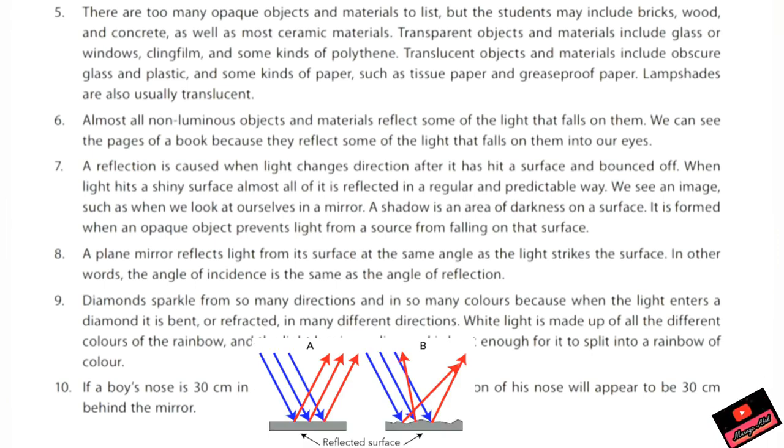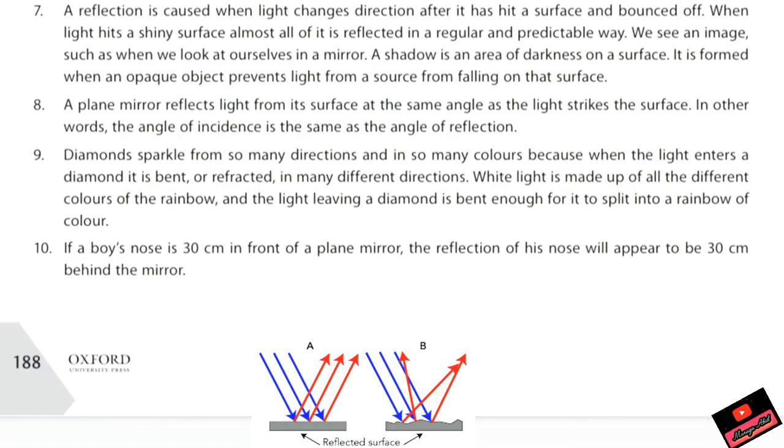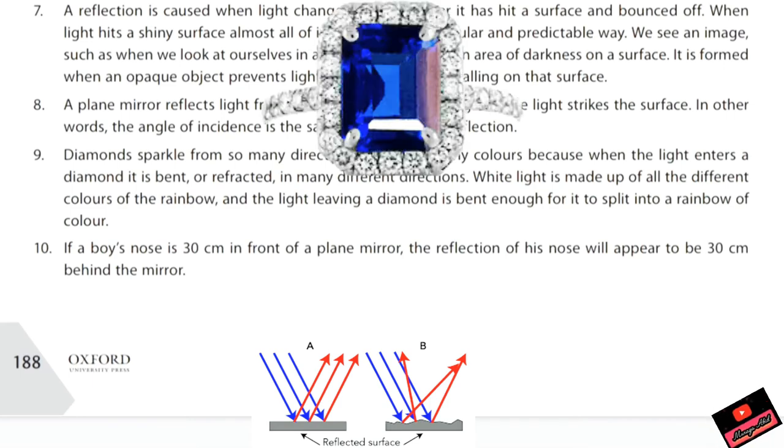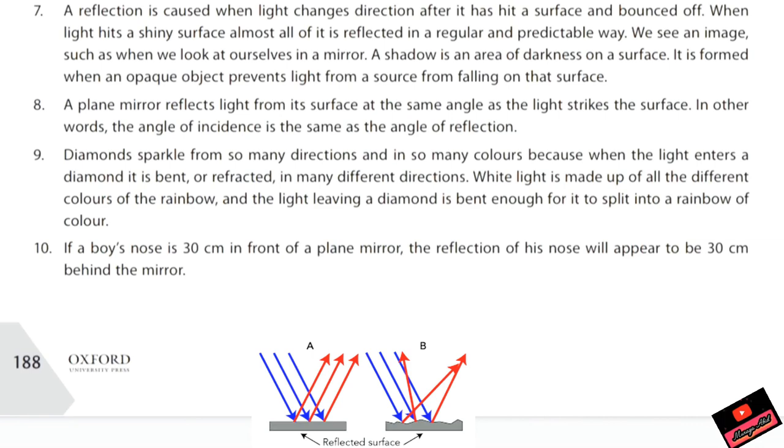Question number seven: A reflection is caused when light changes direction after it has hit a surface. I've shown a diagram of reflection as well. Light is just like a ping pong ball, it is striking a surface and coming back. That's why diamonds are very shiny because they reflect and scatter the light in many directions.